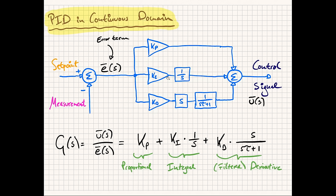The second path is the integral path. The error is multiplied by the integral gain ki and then integrated — denoted in the S domain by 1/S. The third is the derivative path: the error signal is multiplied by the derivative gain kd, and then the rate of change of the error is calculated at the current point in time. Notably, we also apply a low-pass filter to the derivative term — in this linear system the filter can be moved anywhere in the path — and the important thing is that we'll be filtering the derivative term, for reasons that will become clear later.